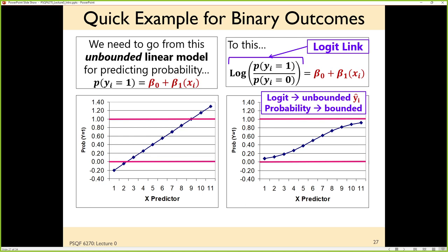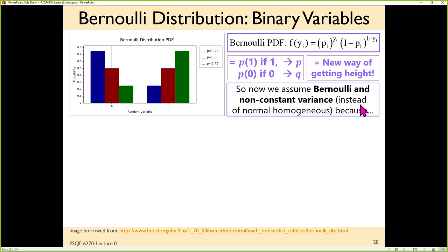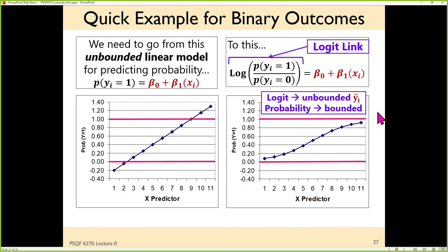Other link functions: logit, probit, Tobit, log, loglog, complementary loglog — they all have different purposes. The logit's job as a link function is to keep predicted outcomes within bounds. Now if you have a binary outcome, the E's can only go in two directions — either I'm off by this much if I had a one, or by this much if I had a zero. There's only two choices. So the E's can't possibly be normal, and they can't have constant variance as a result. To solve that we say: the normal distribution isn't going to fit for that — let's pick a new one.